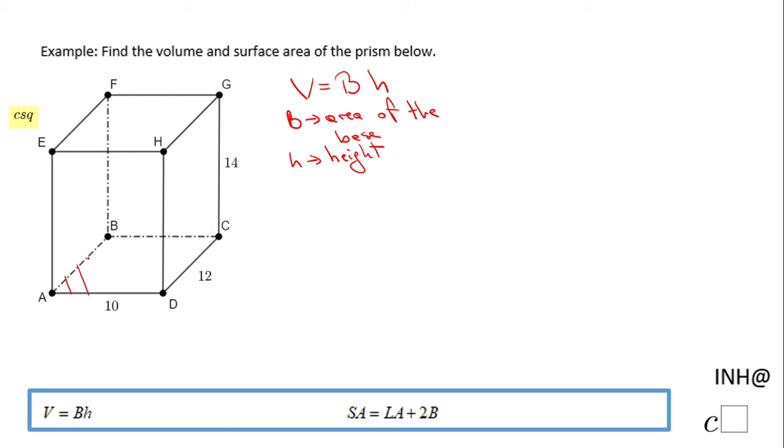If we look here, the base of this prism will be this rectangle, and that area is going to be length times width, length of 10 and width of 12. The area of the base is going to be 120 square units since we do not have any unit.